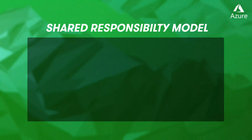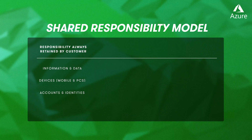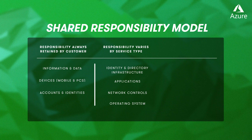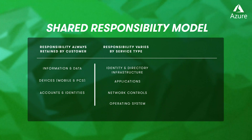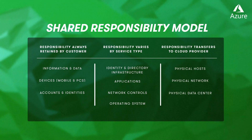Let's start with Azure. Azure splits responsibility into three main categories. The first: the customer is always responsible. This is relevant to information, data, and devices such as mobile and PCs, as well as user accounts, also called identities. The second category is more of a grey area, as it differs based on the cloud model used — SaaS, PaaS, or IaaS. Lastly, we have the cloud provider responsibility category, where the cloud provider is solely responsible for security across SaaS, PaaS, and IaaS. An example of this would be the physical infrastructure in the data centers hosting these services.